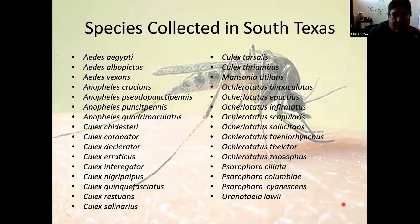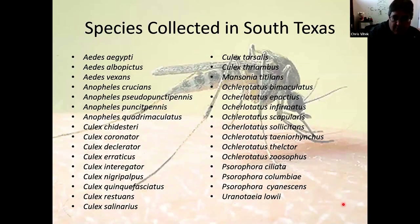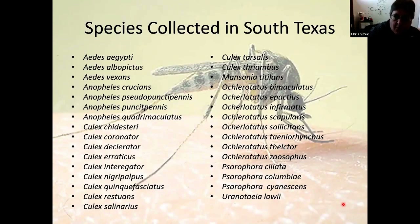The list I have here shows specific species that I've personally collected, or my lab has collected, with different trapping methods — not all 55, probably about 35 or 40 different mosquito species. In some cases we've only found one or two specimens; in other cases, hundreds if not thousands. Not every single one of these is a concern, either as a nuisance because it bites people or as a disease threat because it can transmit diseases.